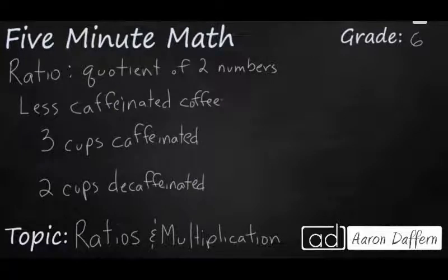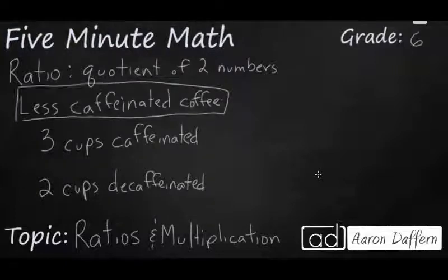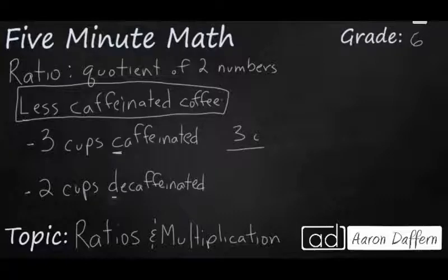Let's look at a different example here. If you wanted to make some less caffeinated coffee, and you wanted to still have a strong coffee taste, you don't want to water it down, you could use a ratio like this. You can take 3 cups of caffeinated coffee, so we'll have that as 3C, for every 2 cups of decaffeinated coffee. So it still has that strong taste. We'll have that as 2D. But it's not going to keep you up all night.